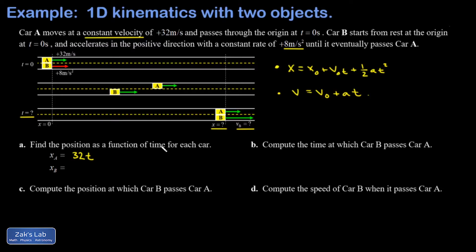Car B is a little more complicated. It also starts at x equals zero, so that term is gone. It has an initial velocity of zero, so that term is gone. But it has a non-zero acceleration, so that term survives. The acceleration is eight, so I get one half times eight times t squared, which I can simplify to 4t squared. So there's my two functions that describe the position of these cars as a function of time.